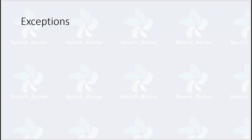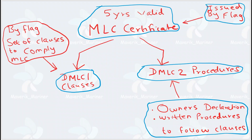What are exceptions? Some rules as mentioned in MLC can be changed as per flag requirements. These are flag rules which differ from MLC, but when applied can still achieve MLC goals and objectives — these are exceptions. They are mentioned in DMLC Part 1, and the equivalent provisions for those exceptions are noted in Part 2. In summary: the MLC certificate has attached copies of DMLC Part 1 (issued by the flag, listing clauses to comply with MLC 2006) and DMLC Part 2 (the owner's declaration with written procedures to follow).